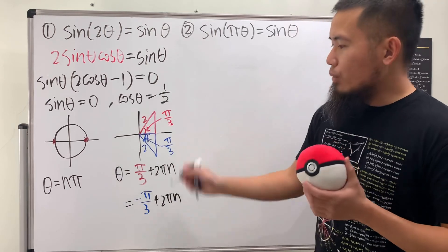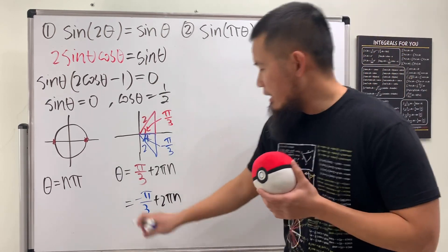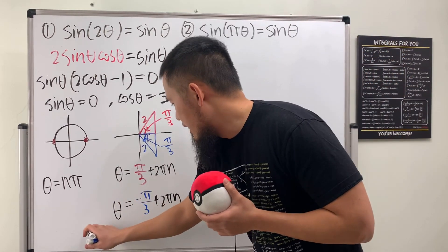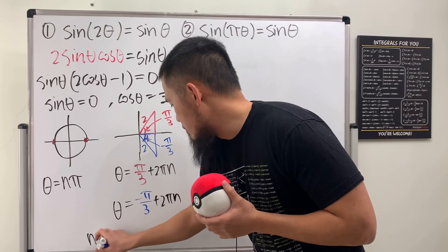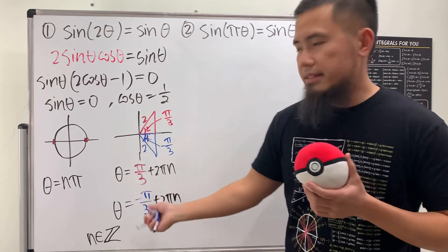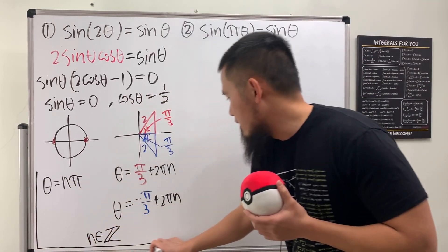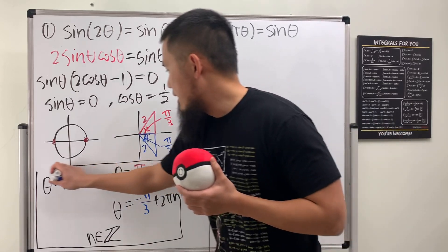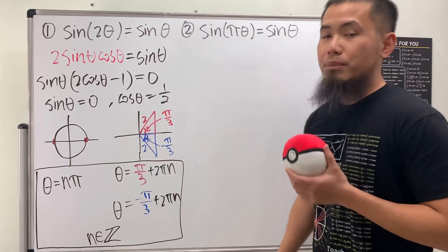So you have all these three expressions that you have to write down. And in the end, maybe you also want to say n is an integer somewhere. So let me just put this down right here. And this is the notation to show that n is an integer. You don't really have to write it down as a sentence. You can just put that down as the notation. So that's pretty much it.